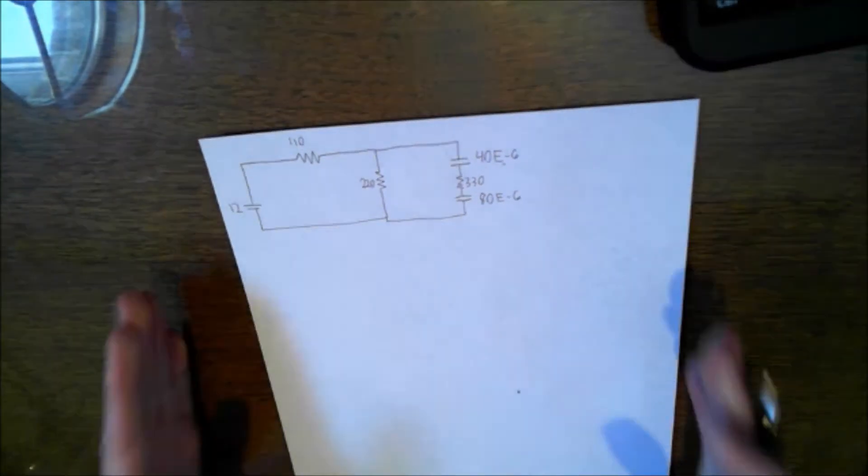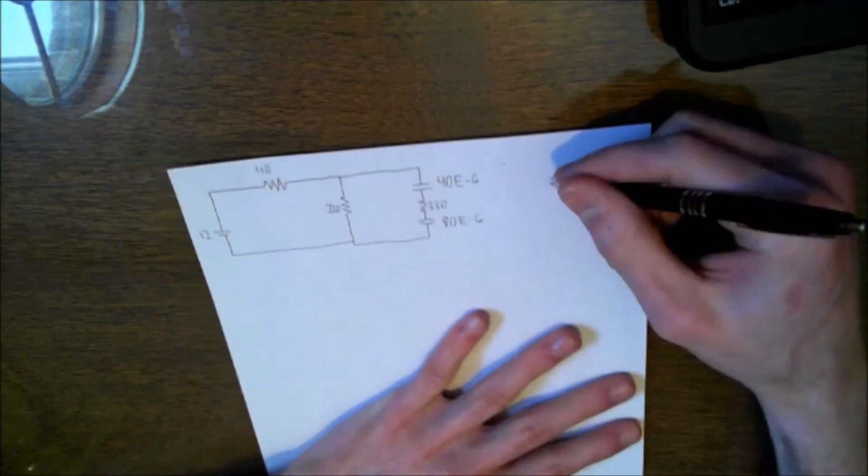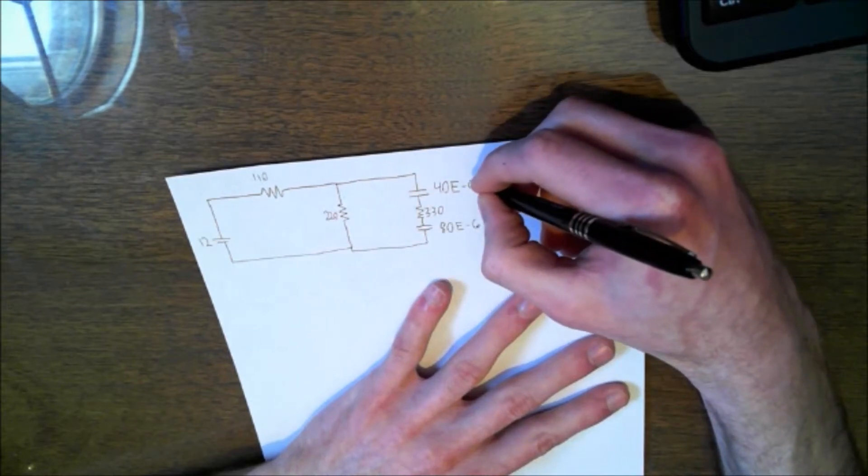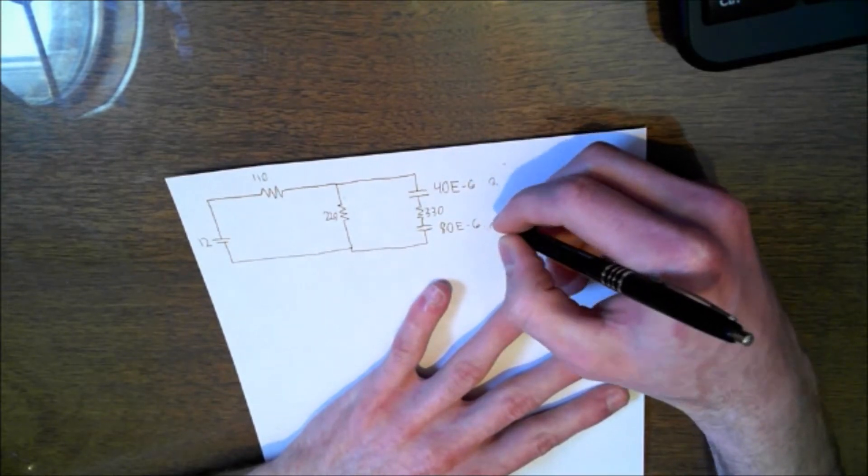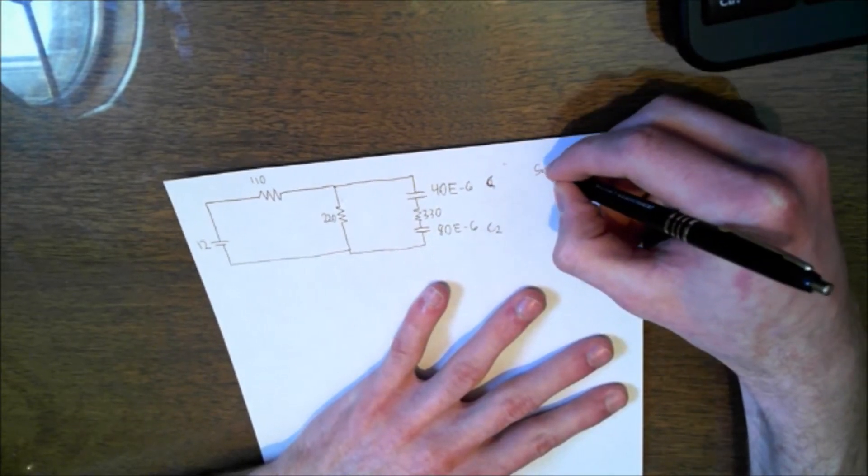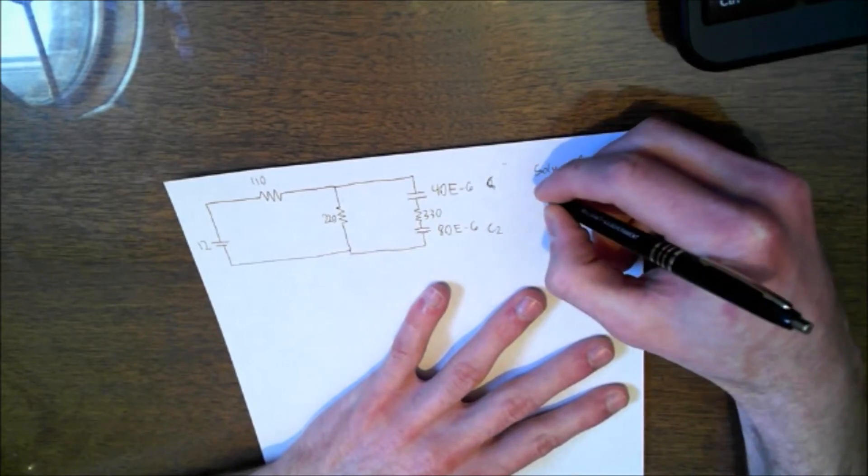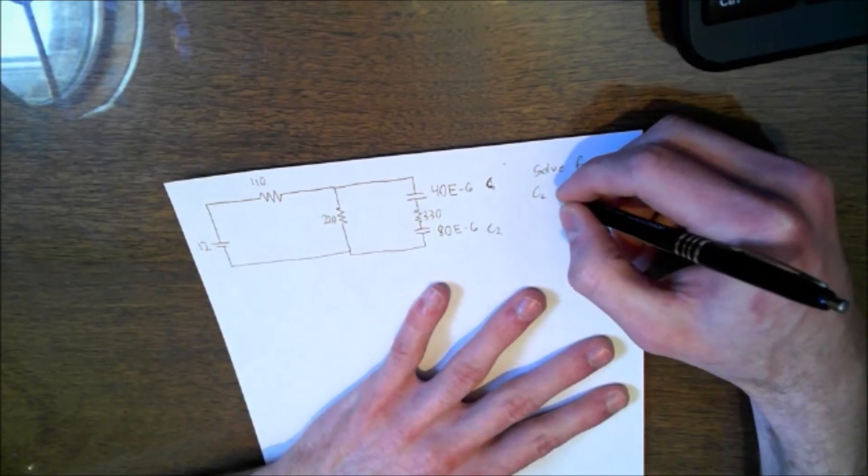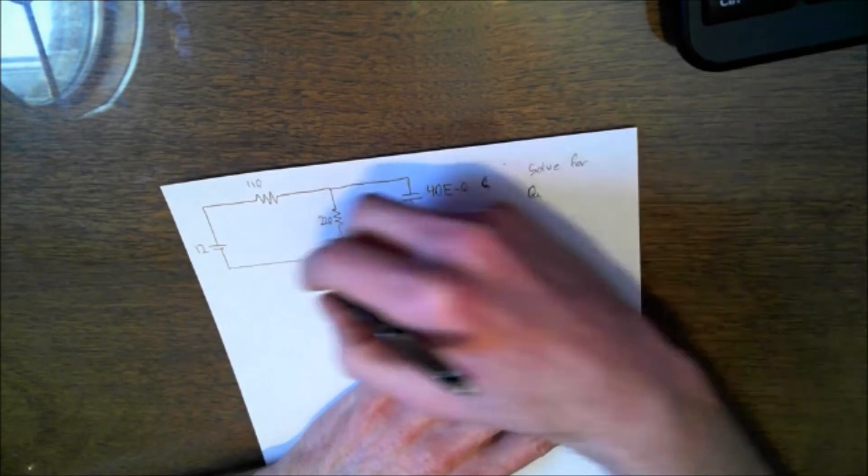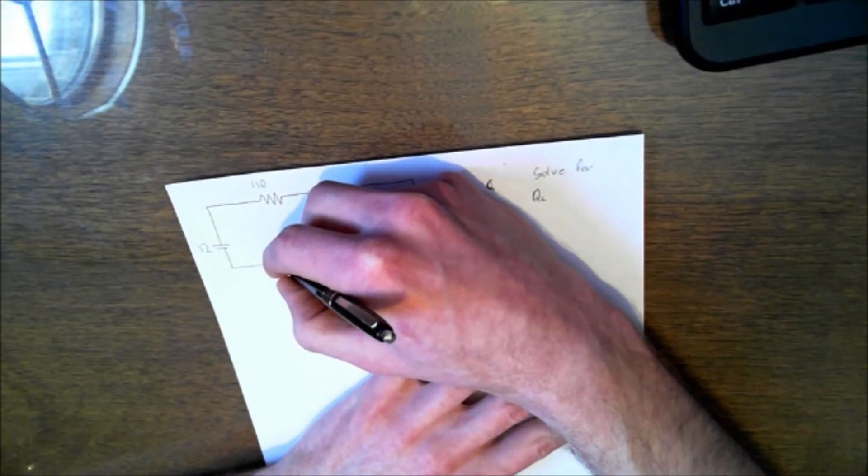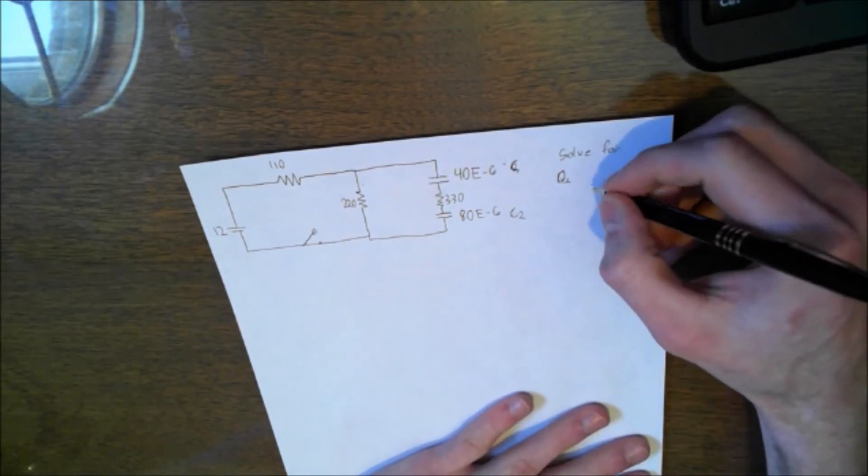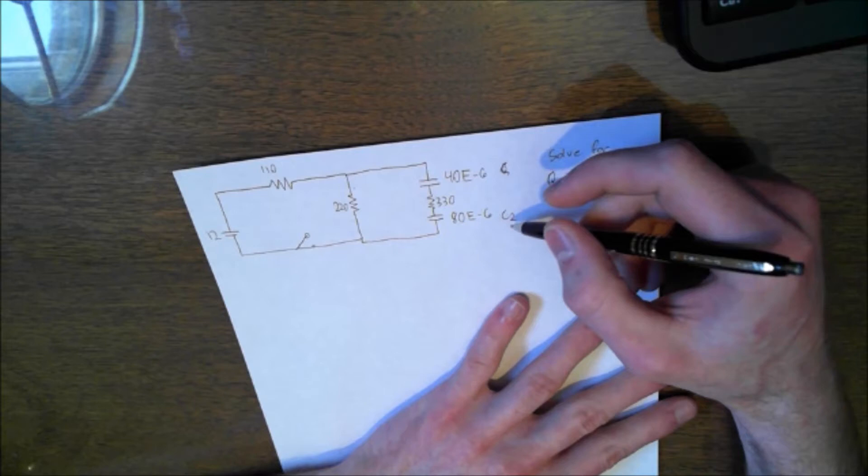So the object of this is we're going to solve for the charge on this capacitor. We're going to call this Q1, or I'm sorry, C1, and this is C2. So solve for charge on C2, or Q2. Oh, there's also a switch here. I'm sorry. So after a very long time, after the switch is closed, solve for the charge on capacitor 2, which is this one.